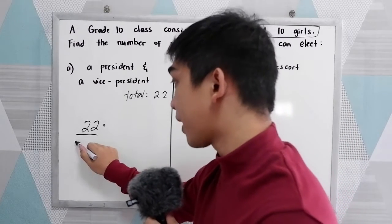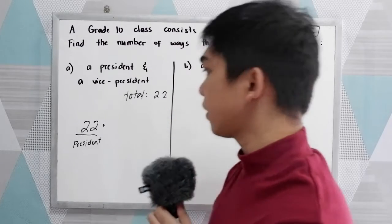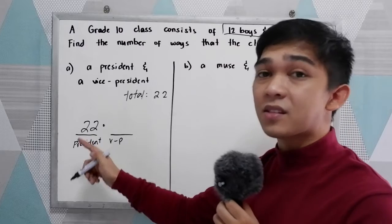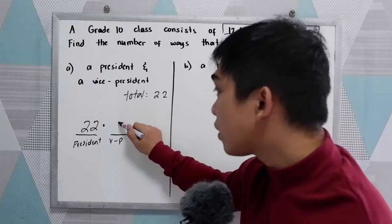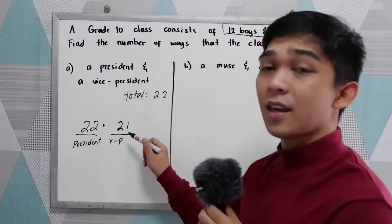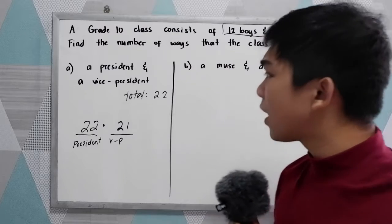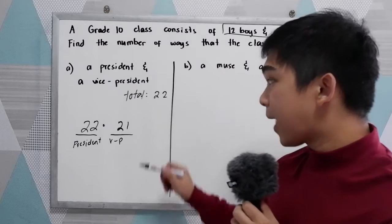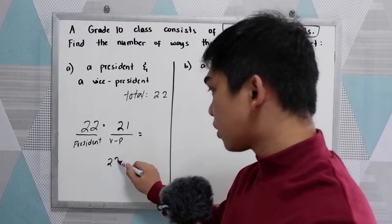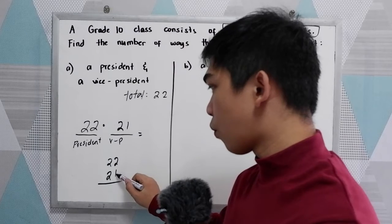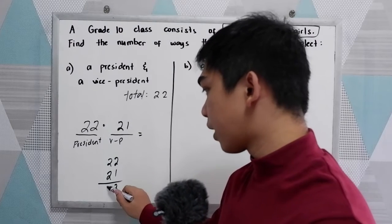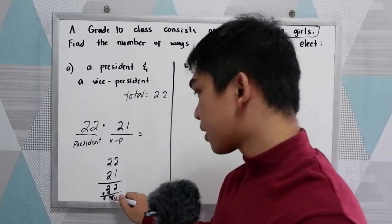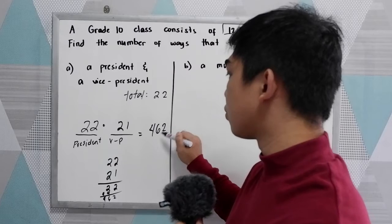For the president, we have 22 possible candidates. For the vice president, if one student is already elected as president, we have 21 remaining candidates. So multiplying 22 times 21 gives us 462. There are 462 ways to elect a president and a vice president.